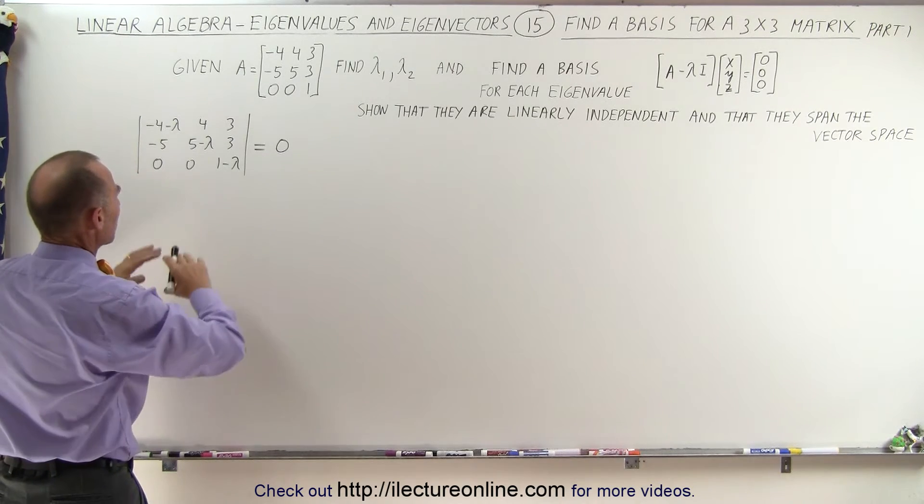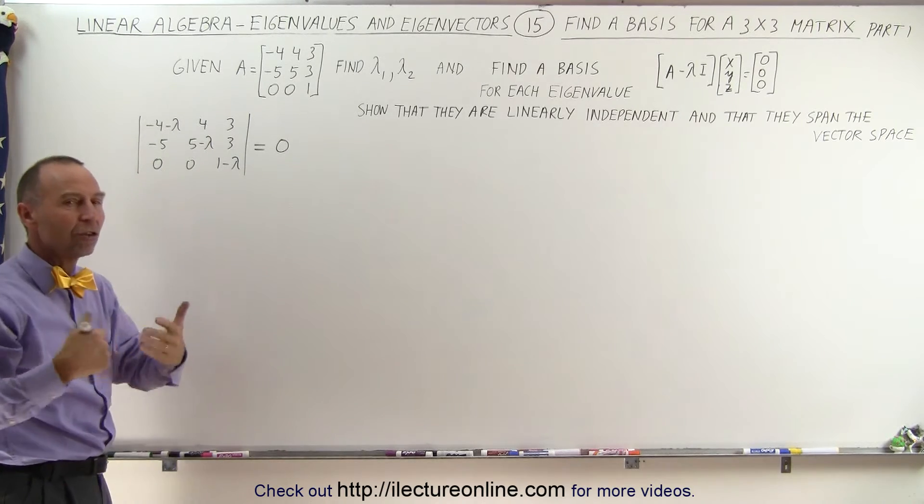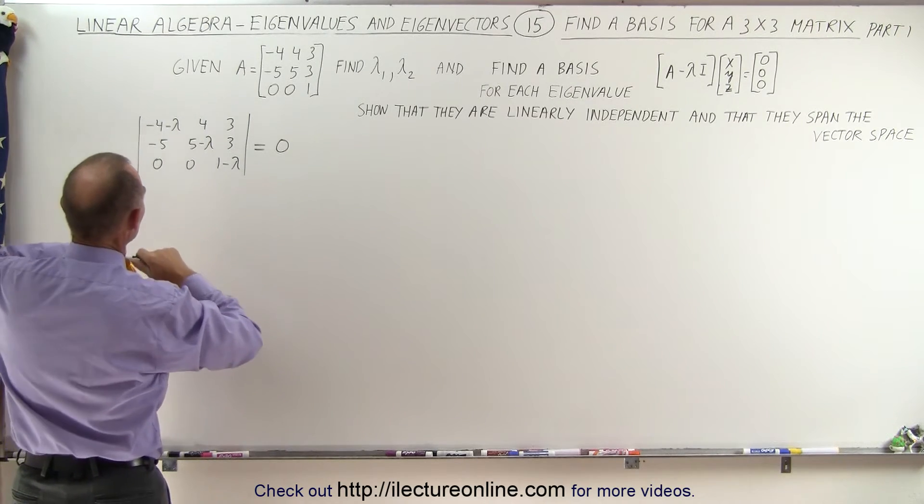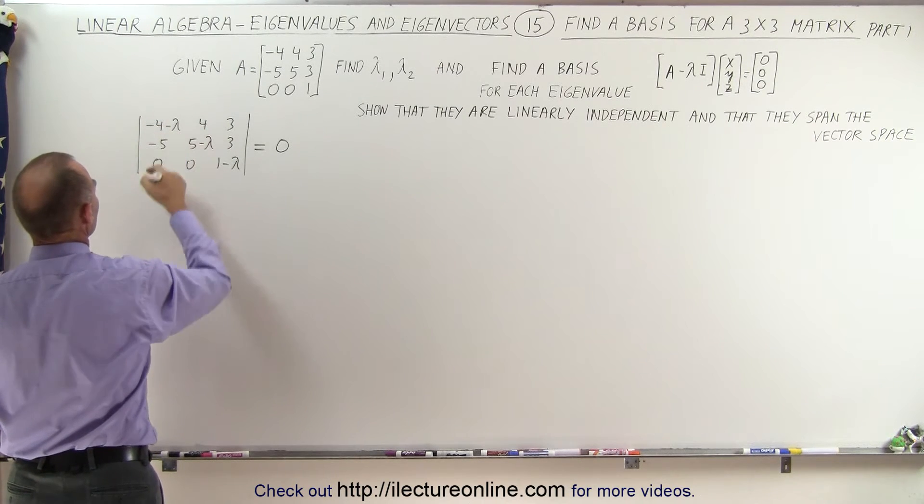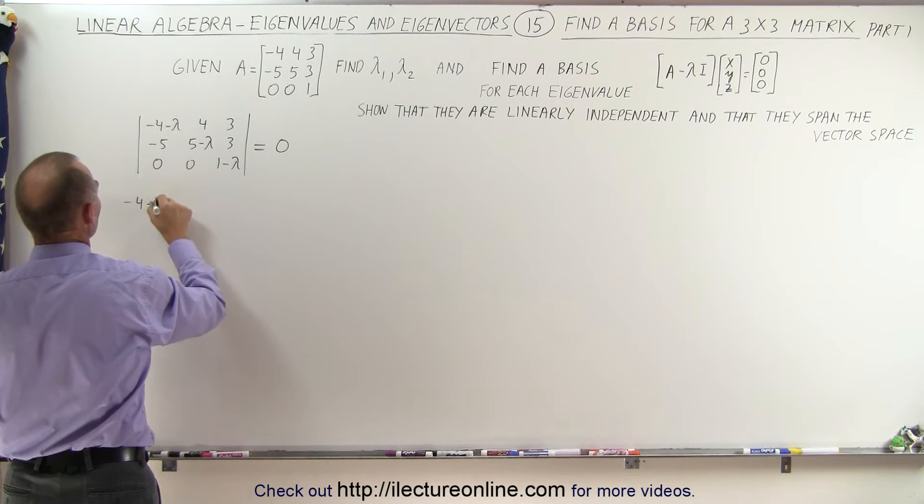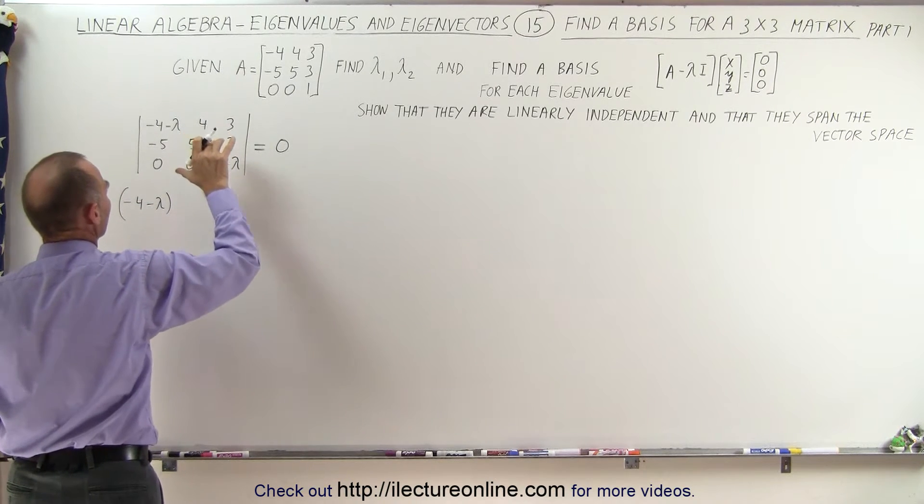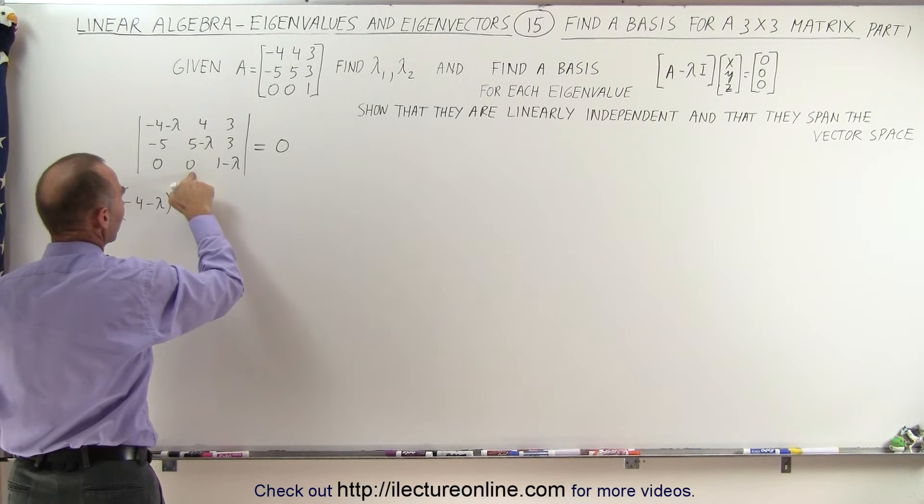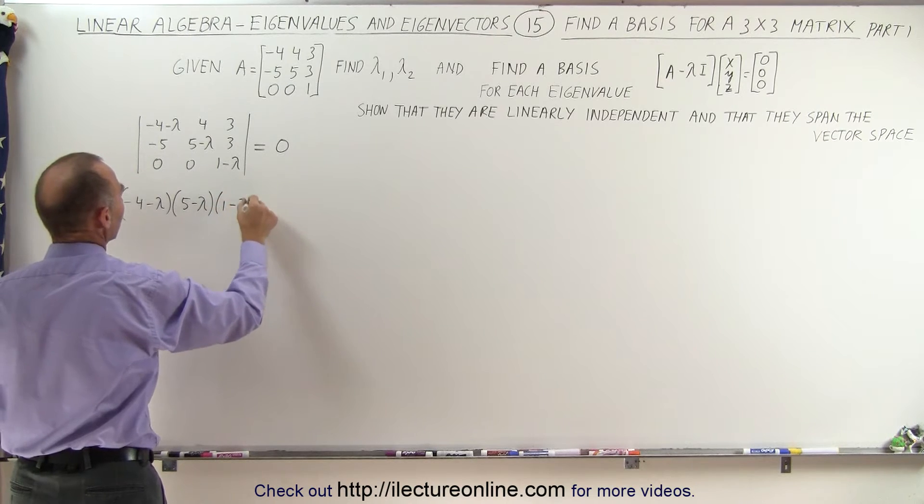So this is a little bit more complicated because it is a 3 by 3 but you just kind of have to slog through it using basic algebra. So we're going to take the first element right here which is minus 4 minus lambda and multiplying it times the product of these two minus the product of those two. Luckily this is 0 so it's simply the product of those two which is 5 minus lambda and 1 minus lambda.